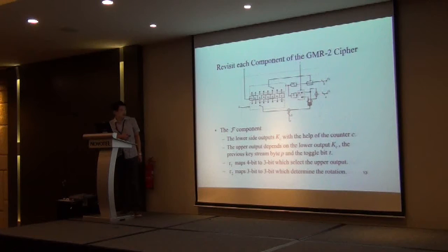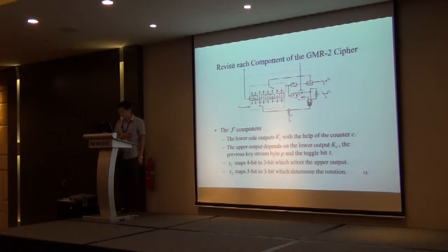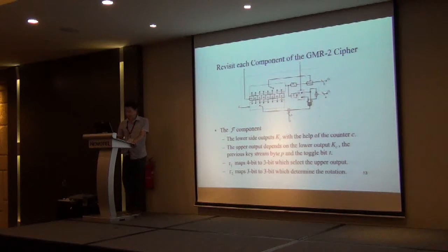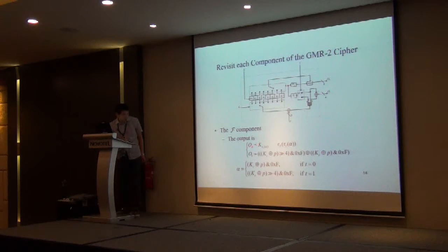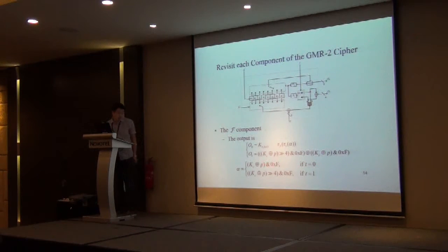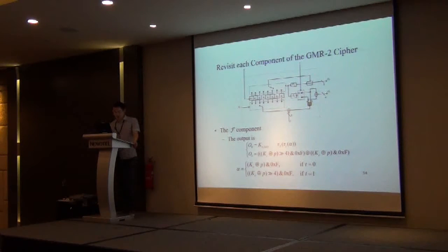According to the value of C, we choose some bytes to form P as input to R. T1 maps 4-bit to 3-bit, which selects the upper output. T2 maps 3-bit to 3-bit, which determines the rotation. The output expression is: if T is 0, the output is the least significant 4 bits of KC XOR P; and if T is 1, the output is the most significant 4 bits of KC XOR P.